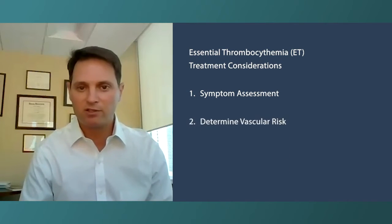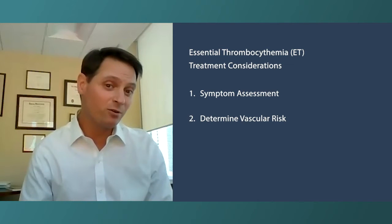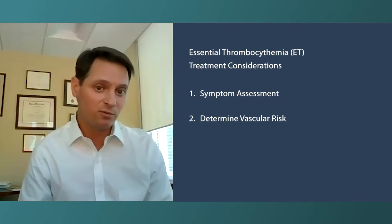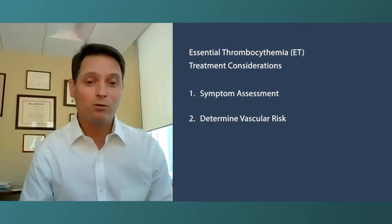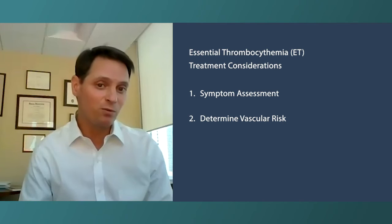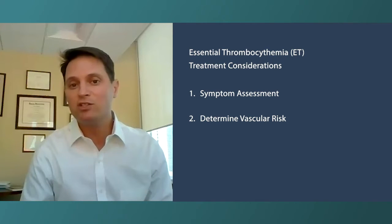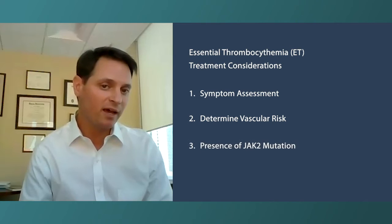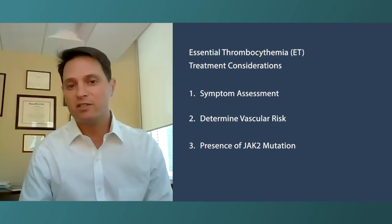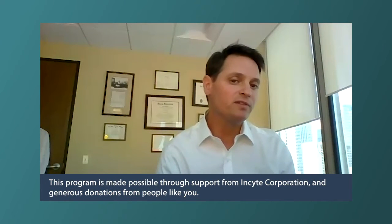Looking at vascular risk: there are four categories of risk in ET in terms of predicting the likelihood of a future blood clotting event — very low, low, intermediate, and high risk. That's based on a patient's age, whether they've had a blood clot before, and the type of mutation they have. JAK2 mutations increase the risk of clotting, so if a patient falls into a higher risk group — say, older than 60 with a JAK2 mutation, or they've had a prior blood clot — those patients are generally treated more aggressively with cytoreduction.